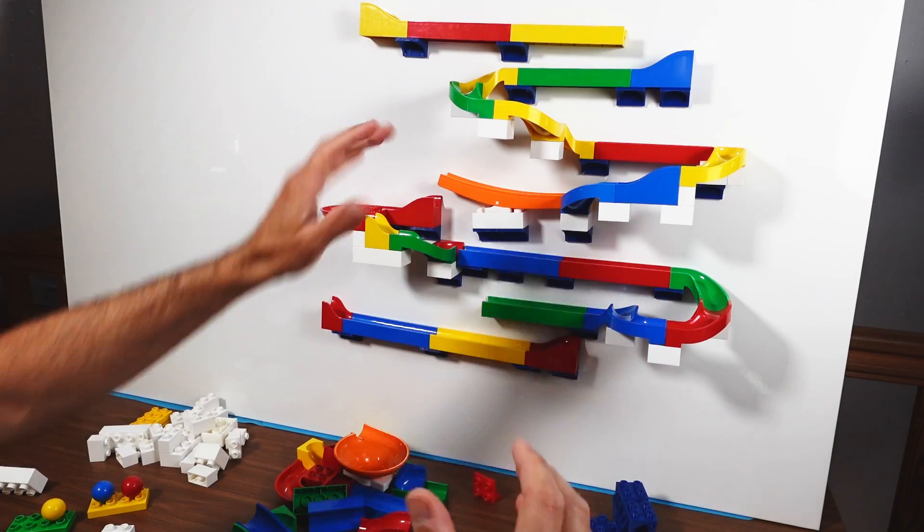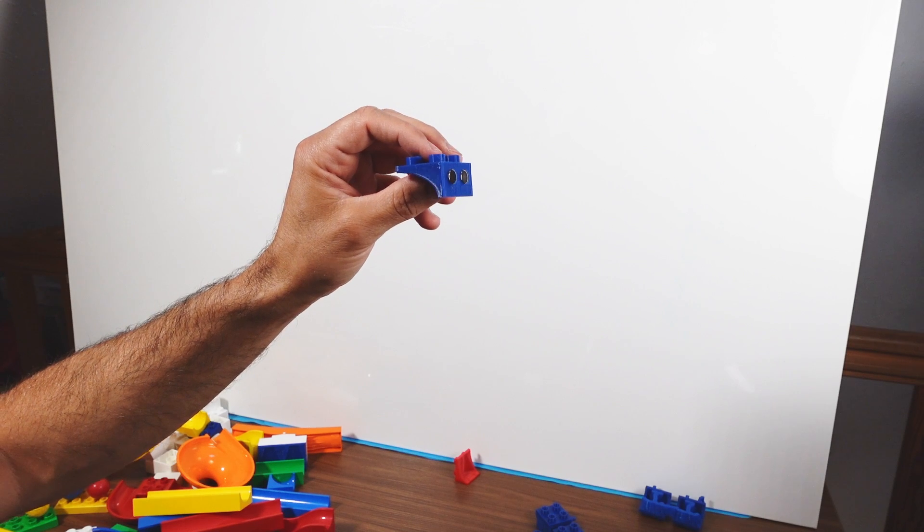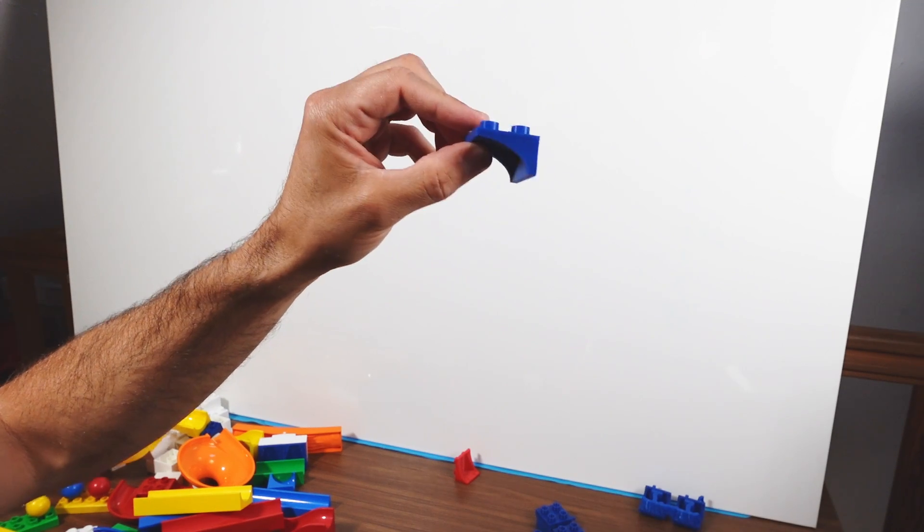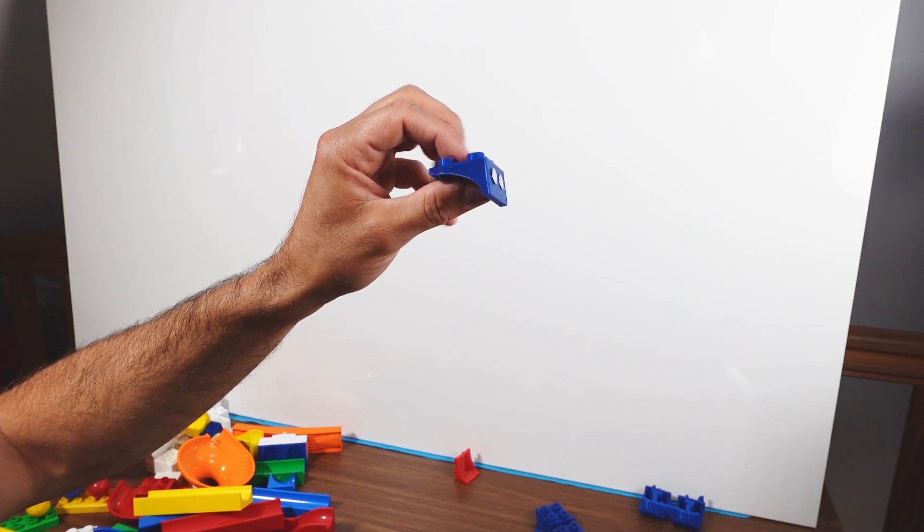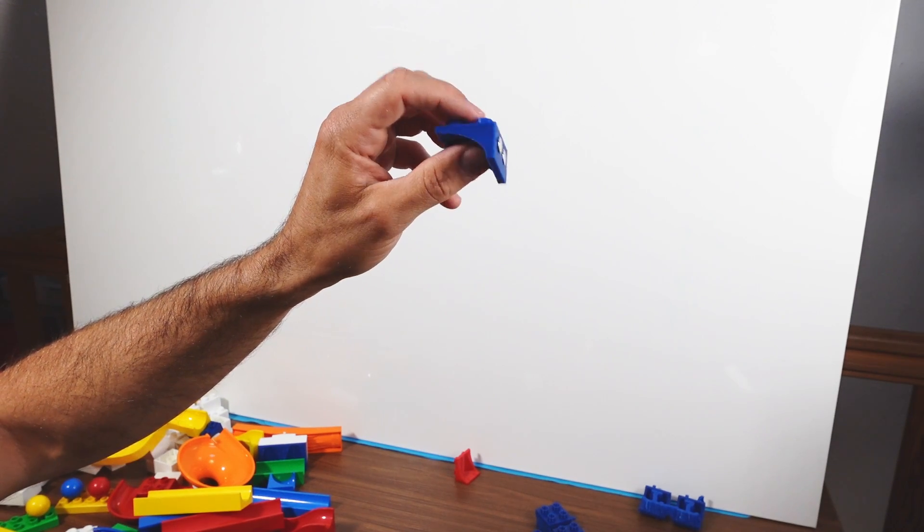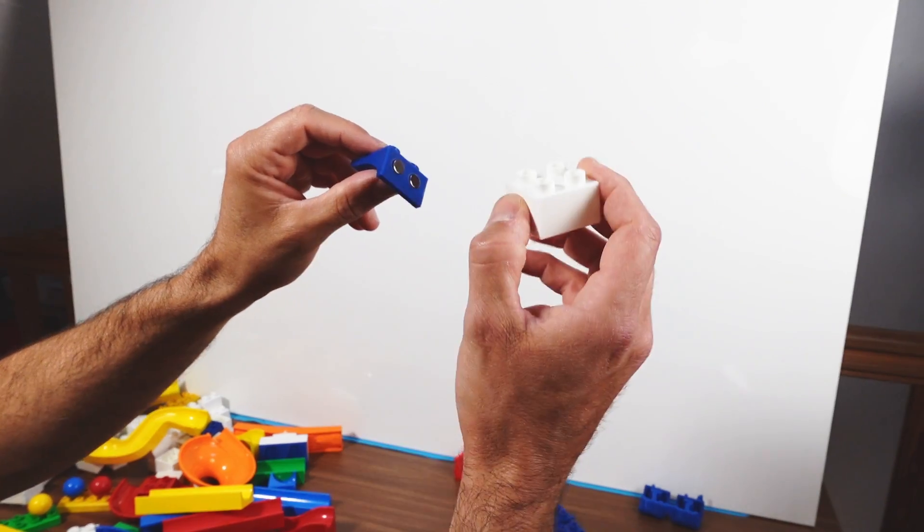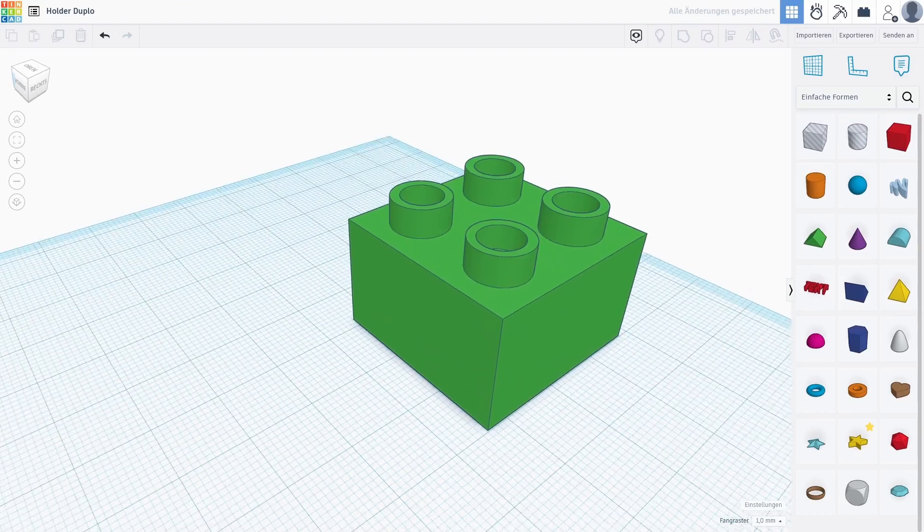But let's start from the beginning. I am not a professional 3D designer or anything so I sat down with a very basic online tool called TinkerCAD that allows everyone to create 3D objects by combining the most basic geometrical shapes, and the first thing I did is I constructed a building block like this.